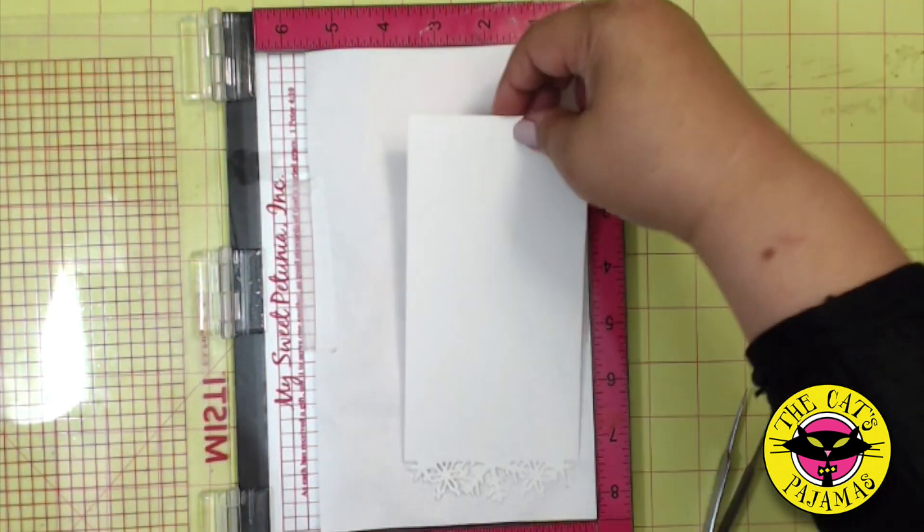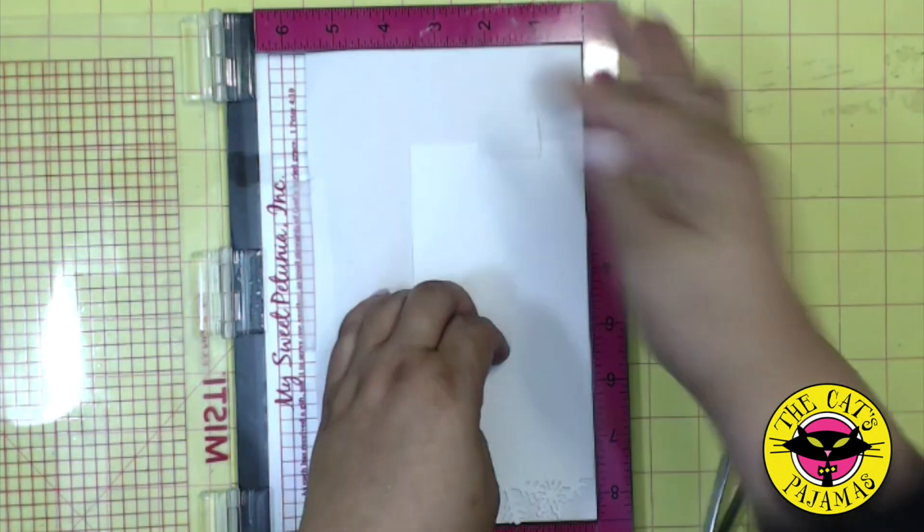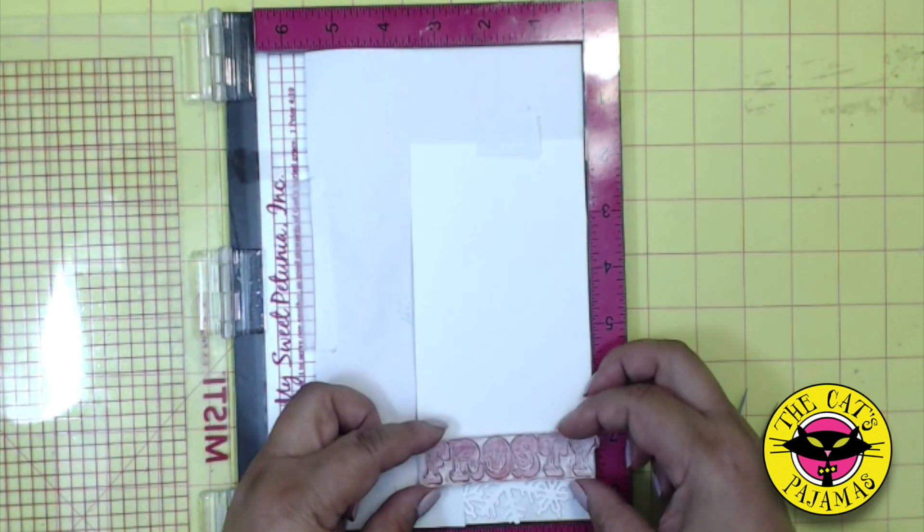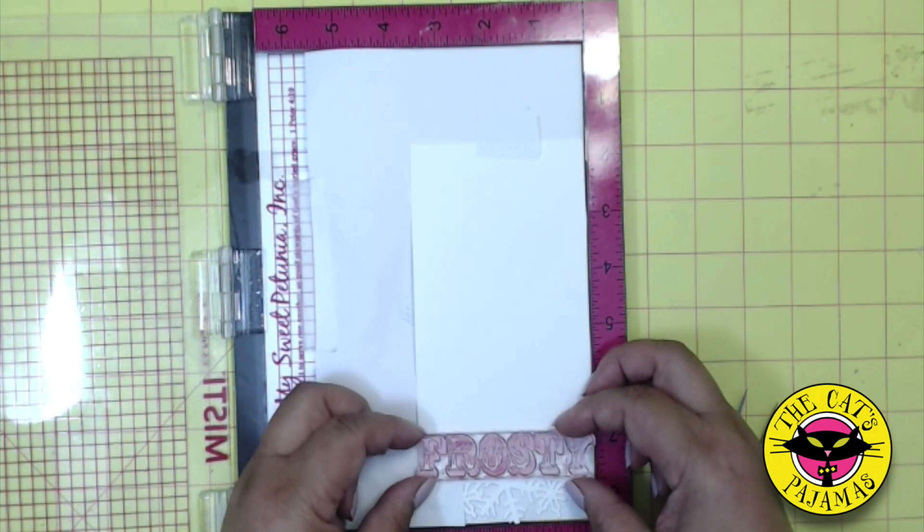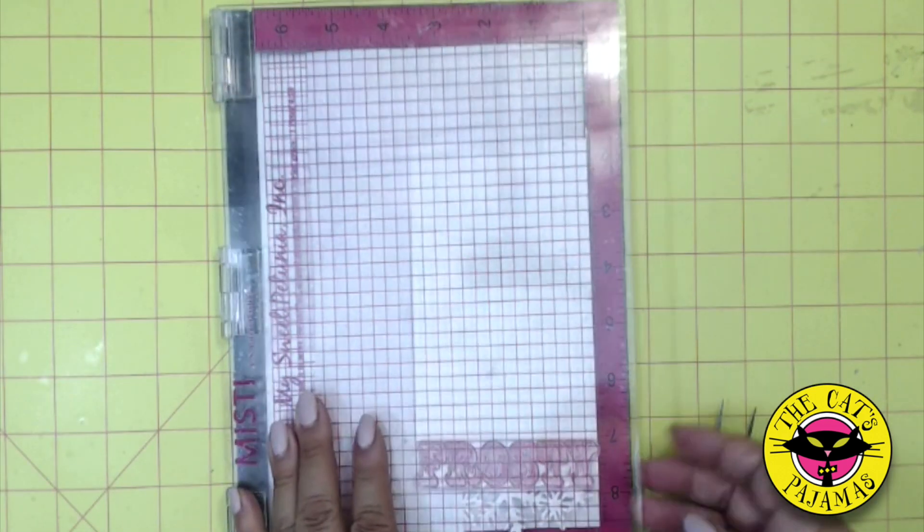For this next part, for the extra precision, I'm going to be using my Misti. I'll just place a stamp exactly where I want it on the paper and then press the top down to attach the stamp.